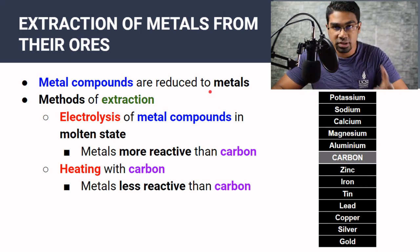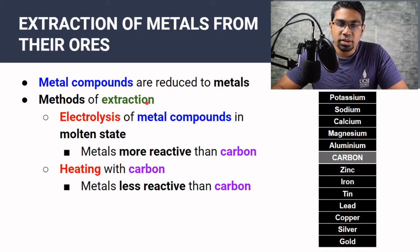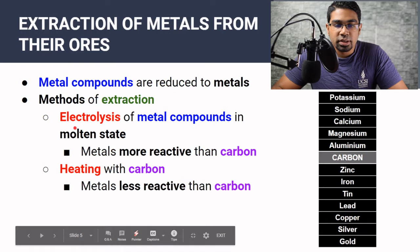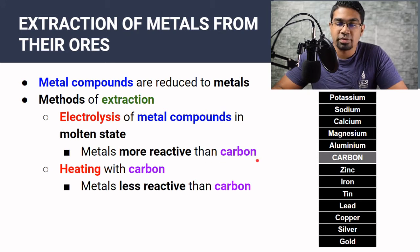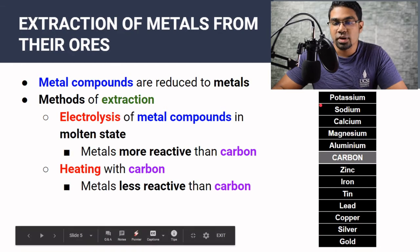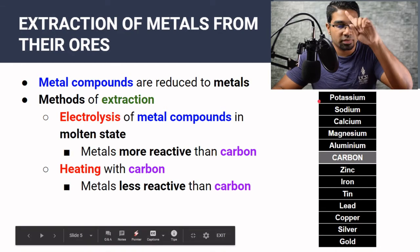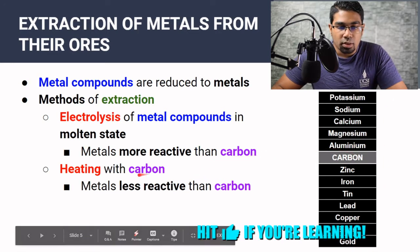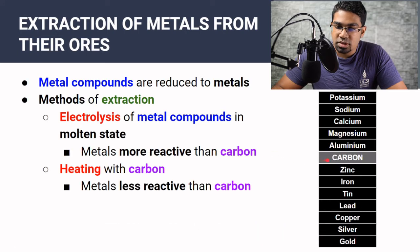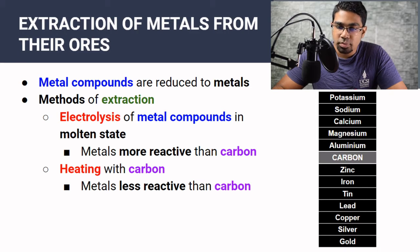Extraction can be done using several methods depending on which is most practical and cheapest. One method is electrolysis — the electrolysis of metal compounds in a molten state. This method is used for metals that are more reactive than carbon. Looking at the reactivity series of metals, the metals more reactive than carbon — higher than carbon in the series — are potassium, sodium, calcium, magnesium, and aluminium. If we want to obtain any of these from their compounds, we use electrolysis.